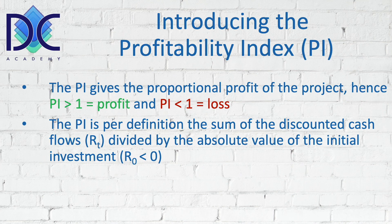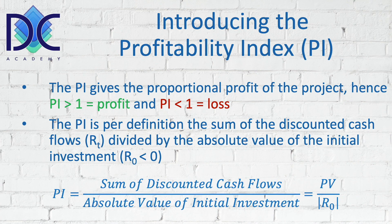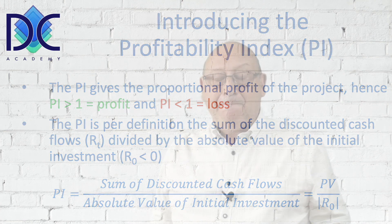The PI is calculated as the sum of the discounted future cash flows — the present value of all future cash flows — divided by the absolute value of R0, the initial investment. You take out the minus sign, which is why we use the absolute value. We can calculate this for the variable cash flows example.